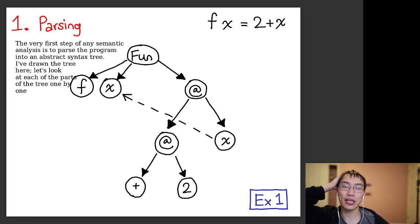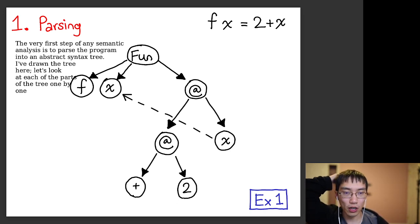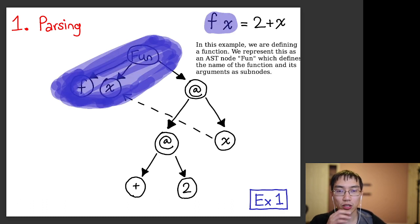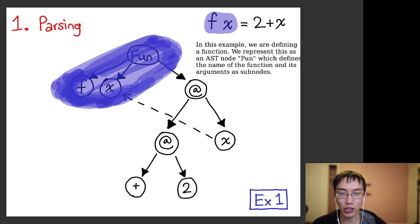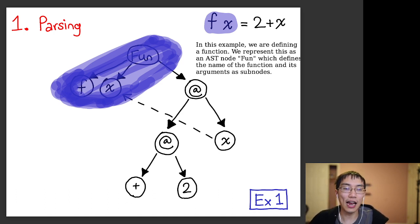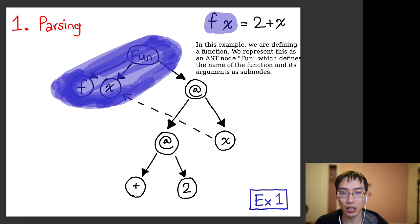To start this example, the first thing I need to do is parse the program into an abstract syntax tree. The 'fun' node at the top says: this is a function definition, the function is named 'f,' the argument variable is named 'x,' and the right-most branch points to the body of the function — which is '2 + x.'